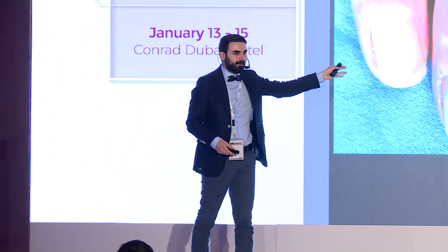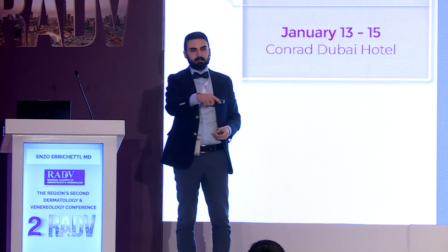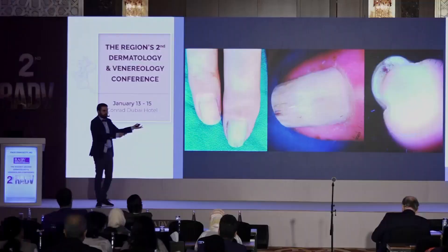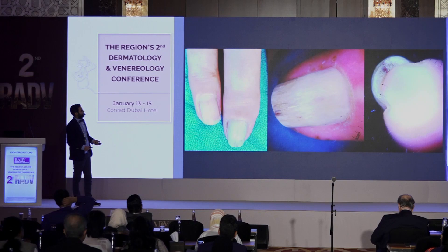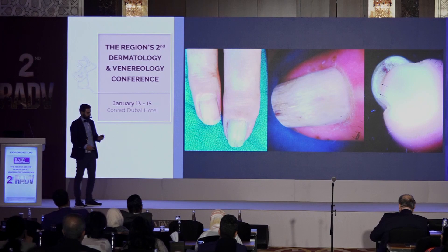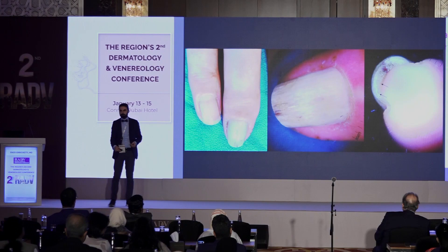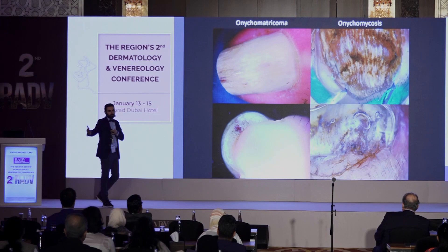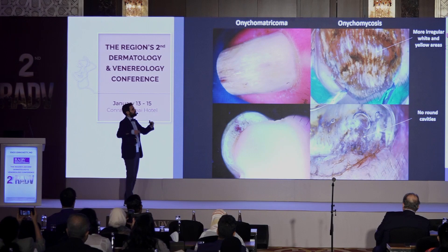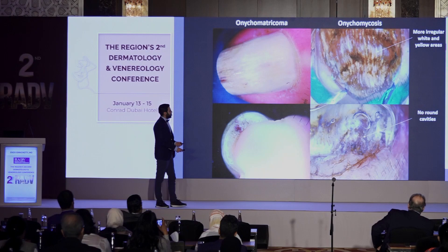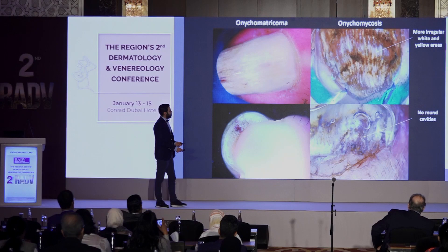This case involving the whole nail plate is a challenge as it may be mistaken for a fungal infection. But we still see the cavities — holes filled with keratotic material on the frontal view. We can differentiate onychomatricoma from onychomycosis: onychomycosis displays more irregular, non-homogeneous white and yellow areas and on frontal view there are no round holes but a ruined, messy appearance instead.